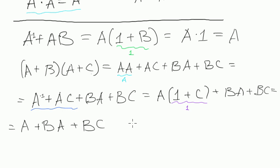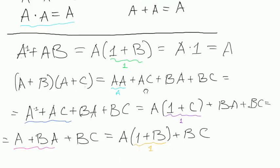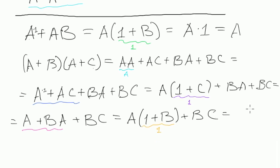And you can see that we can do the same trick again. We can take A out of brackets. And what do we get? A multiplied by 1 plus B plus BC. And again, we remember that this one will be 1 because of this rule. So the whole expression will be A plus BC. And that's the answer.